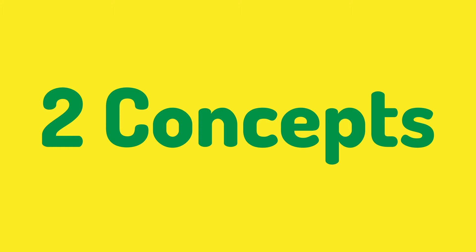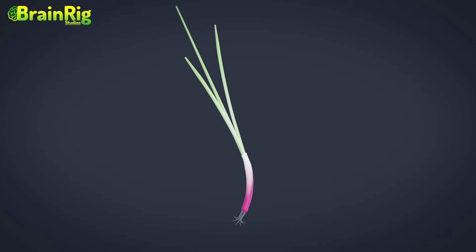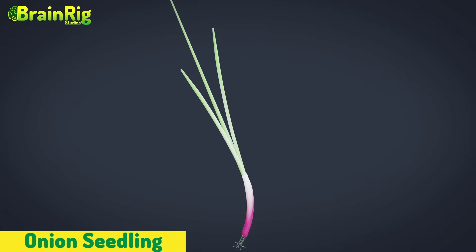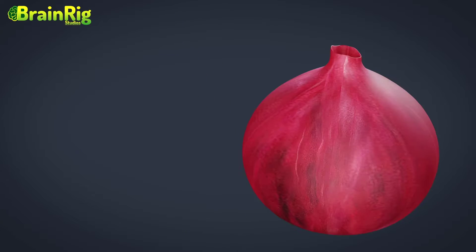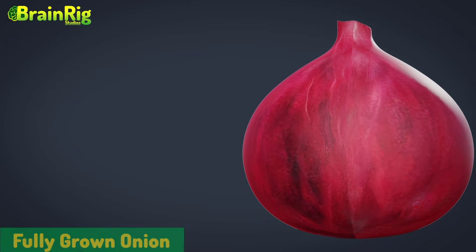To understand the science behind onions, first we'll have to grasp two small concepts. In general, it looks like this when we sow onion seedlings into the ground. And after a few months, when we pull out the fully grown onion from the ground, it looks something like this.